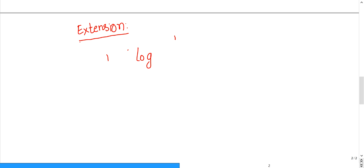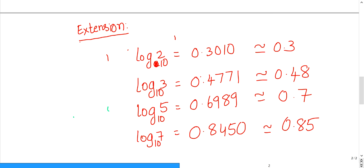Try to memorize these logarithmic values. Log 2 to the base 10 is 0.3010, approximately 0.3. Log 3 is 0.4771, approximately 0.48. Log 5 is 0.6989, approximately 0.7. And log 7 is 0.8450, approximately 0.85.